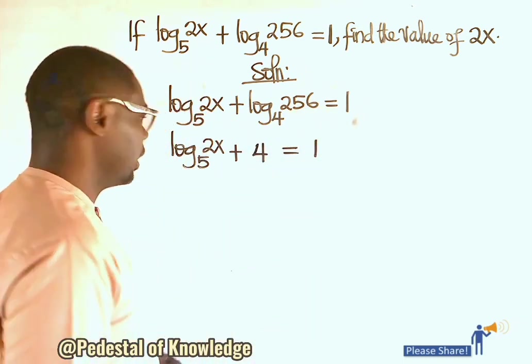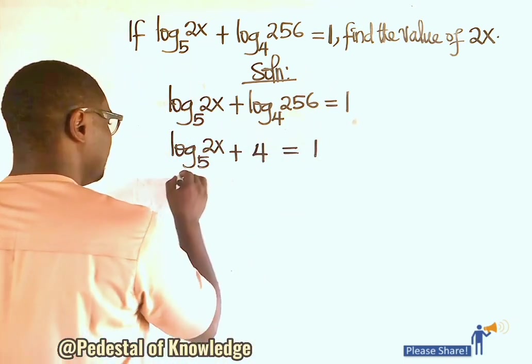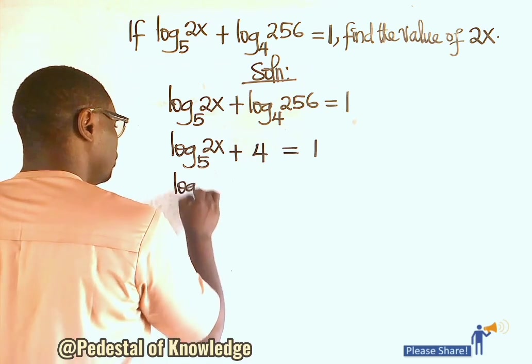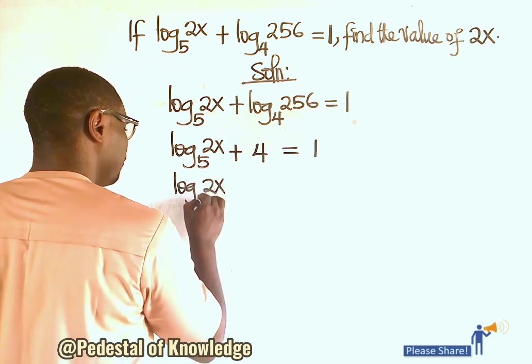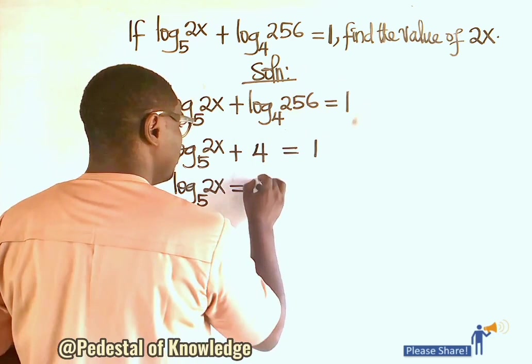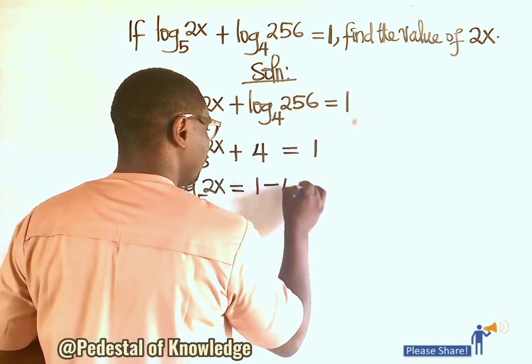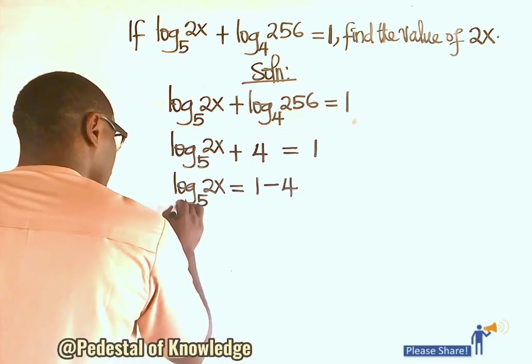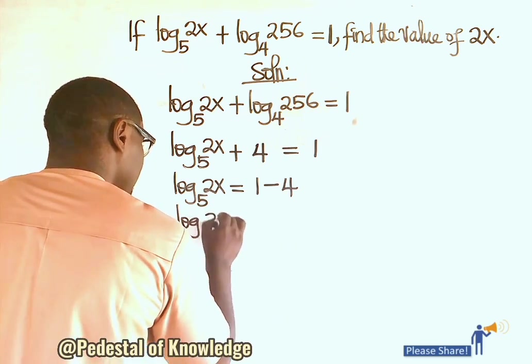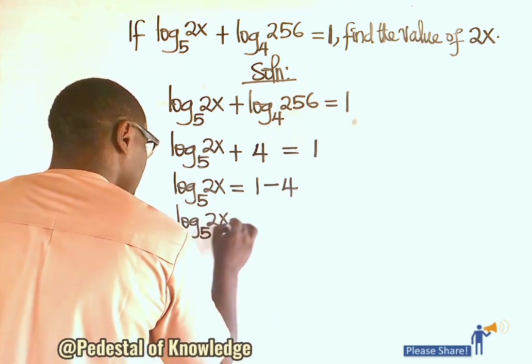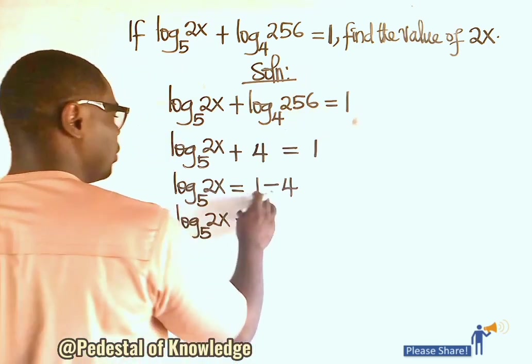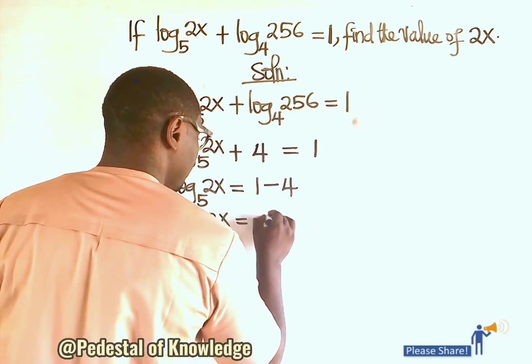Now, from here, when we collect like terms, we have log base 5 of 2x equals 1 minus 4. Log base 5 of 2x equals, remember, 1 minus 4 equals minus 3.